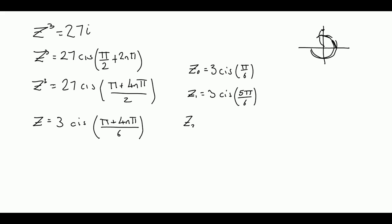And z₂ = 3 cis. So 4 times 2 is 8, 8π plus π is 9π/6. Now that's it finished. In some cases you might be asked to change those into rectangular form. If you need to you can see an earlier video on how to do that.